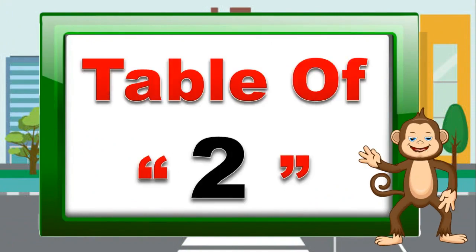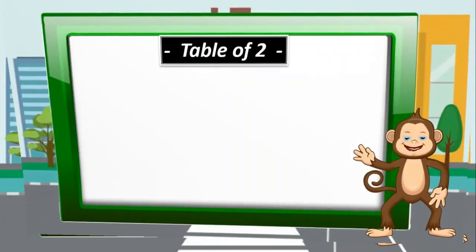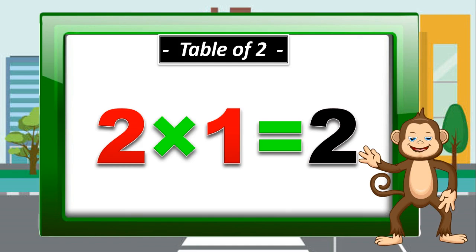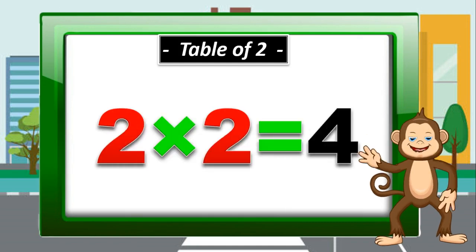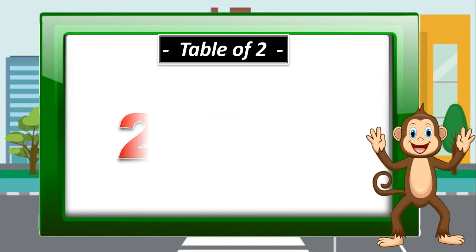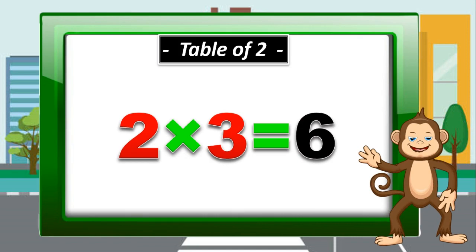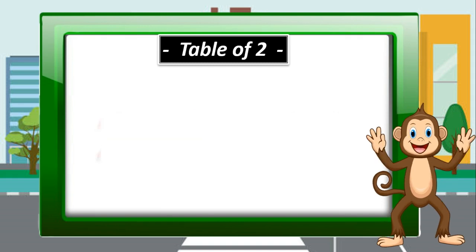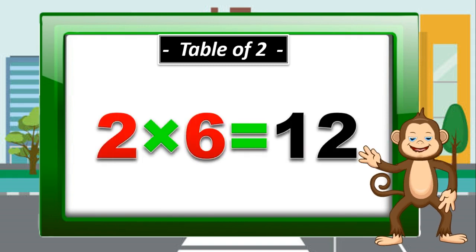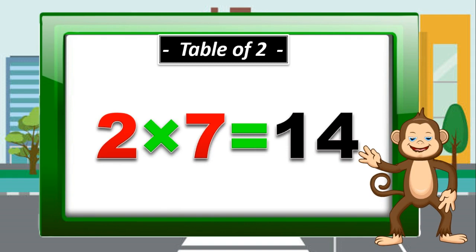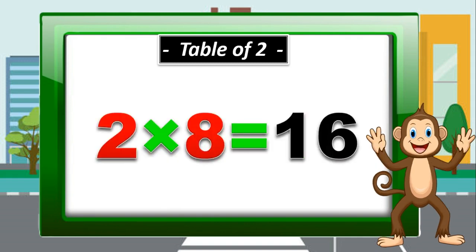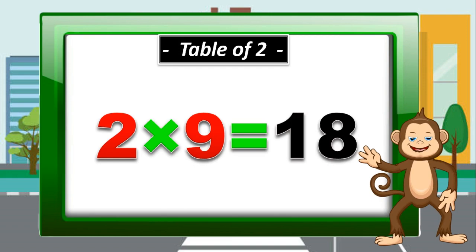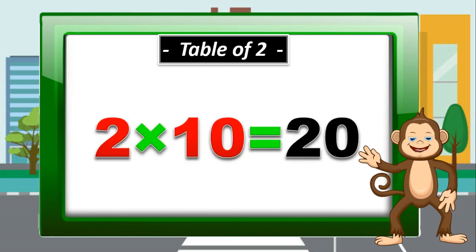Table of 2. 2 times 1 is 2. 2 times 2 is 4. 2 times 3 is 6. 2 times 4 is 8. 2 times 5 is 10. 2 times 6 is 12. 2 times 7 is 14. 2 times 8 is 16. 2 times 9 is 18. 2 times 10 is 20.